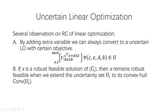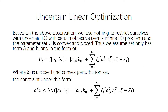Another observation is that if x is a robust feasible solution, x remains robust feasible when we extend the uncertainty set U_i to its convex hull. It still leads to the same optimal value. Based on these two observations, we can say that we lose nothing by restricting ourselves only to uncertainty linear optimization problems with a certain objective and where the parameter set U is a convex and closed set.